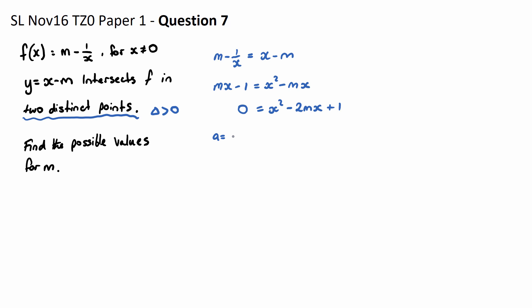So the discriminant of this: if I have my a as the coefficient of x squared, which is 1, my b which is the coefficient of x is negative 2m, and my c as the constant 1, my discriminant is b squared minus 4ac. I'm going to have negative 2m squared minus 4 times 1 times 1, and this will be greater than 0.